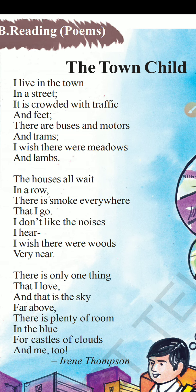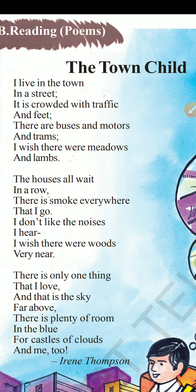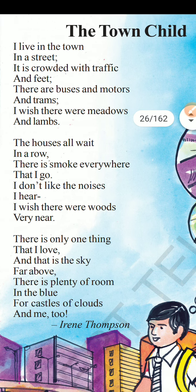So in this first stanza, the street where the child lives is very much crowded with traffic and feet — feet meaning people walking here and there. Buses, motors, and trams are going about, and instead of all this, he wishes there should be meadows and lambs. Let's enter into the next stanza.